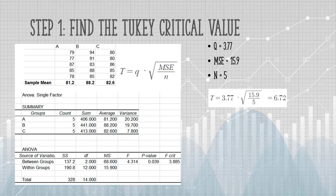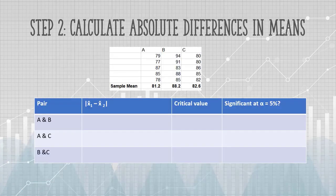So we have our critical value, now we want some data to compare it to. We're going to calculate the absolute differences in means and compare those to our critical value. So I've made a table. In the first column, I have all my possible pairs. I have pair A versus pair B, A and C, and finally, I'm going to compare B and C. I calculated my critical value as 6.72, so I can fill that column in.